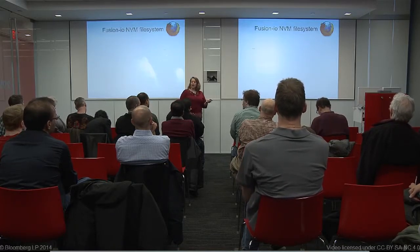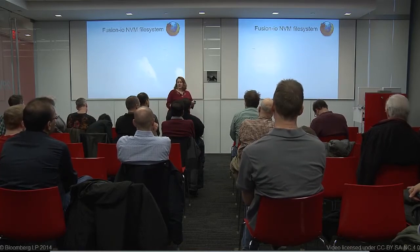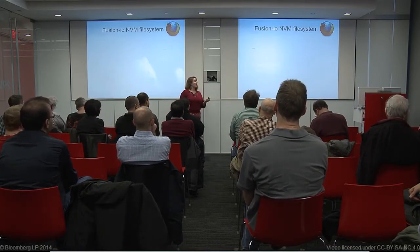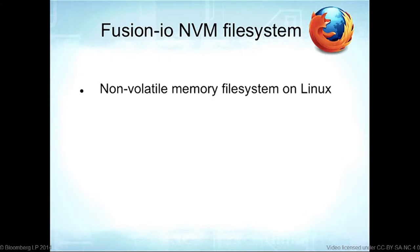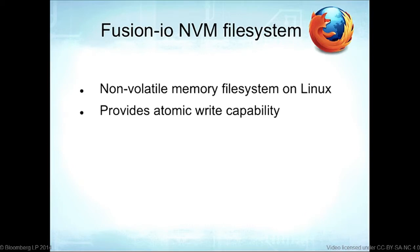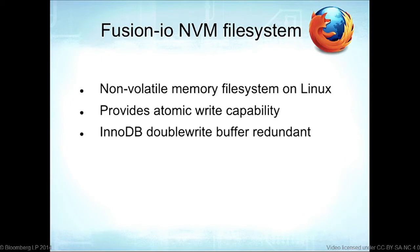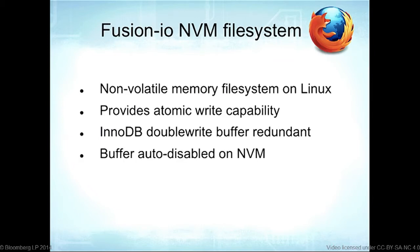Fusion IO support: Fusion IO has a non-volatile memory file system on Linux that provides atomic write capability — the same 'atomic' as in ACID compliance. This makes the InnoDB double write buffer redundant, since the double write buffer writes data twice for safety. MySQL 5.7 automatically disables the double write buffer when it detects you're using Fusion IO's file system.